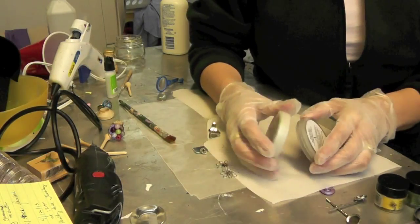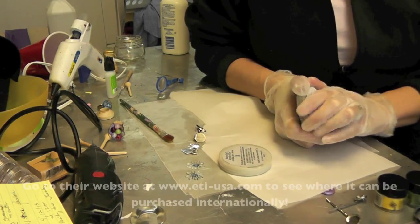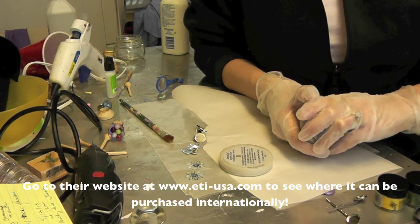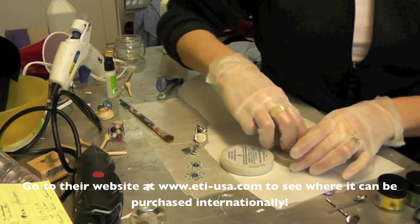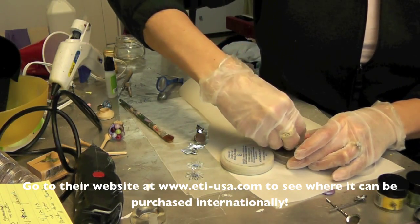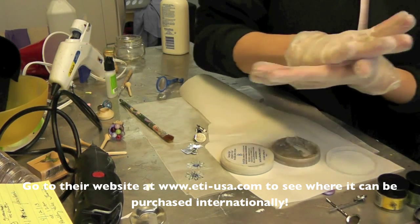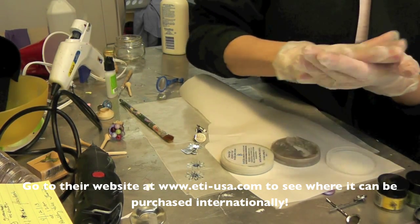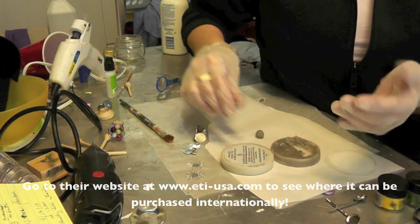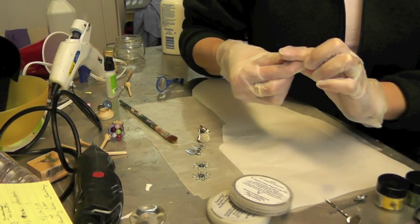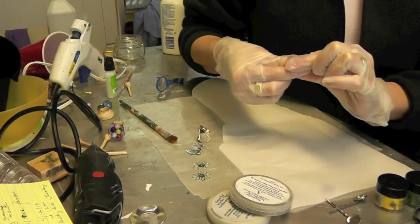We're going to use the jewelry clay like I have before that's made by Envirotex, and you need equal parts of A and B. I'm going to need enough to cover the pendant and the earrings, and you want to blend it until it is one consistent color.